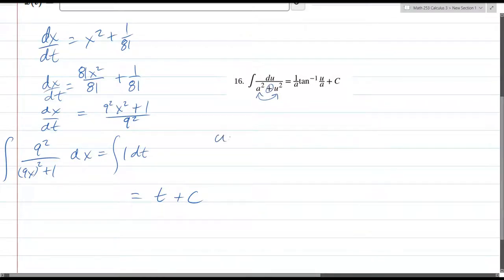We do need to make a u substitution. So u equals 9x, du equals 9 dx. This is almost perfect, so we're going to take one of these 9s here and the dx. So this is going to be 9 integral du over u squared plus 1.